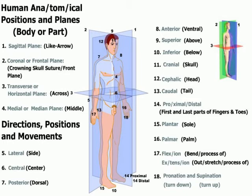Number one is the sagittal plane. The sagittal plane divides the body into the right and left halves. The word 'sagitt' in Latin means arrow — it's like an arrow passing through the body, dividing it into a right and left aspect.